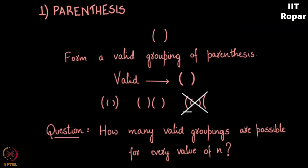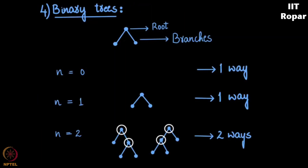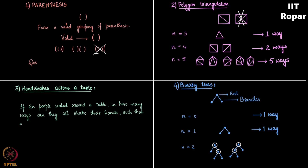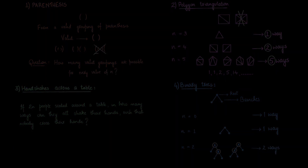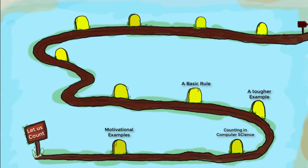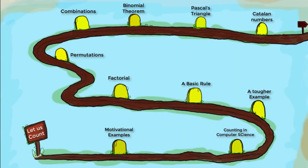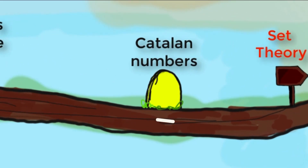So these were some of the examples of Catalan numbers — there are several more. I hope it was interesting. Please post all your questions, queries, and doubts on the discussion forum. We have now come to the end of the first chapter, where we learnt several elementary techniques on counting. These are going to be the building blocks for more advanced techniques on counting.